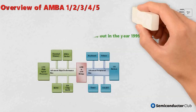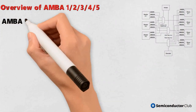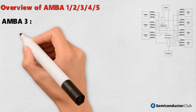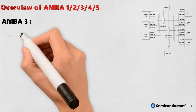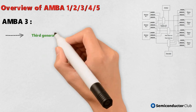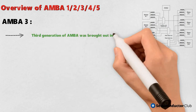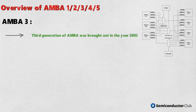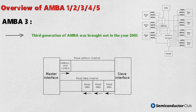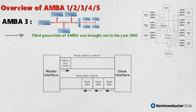AMBA 3: the third generation of AMBA was brought out in the year 2003. Through this version, ARM introduced Advanced Extensible Interface AXI 3 (AXI V1.0), with slight modifications in AHB and APB. AHB-Lite V1.0 and APB 3 V1.0 came out respectively. Advanced Trace Bus (ATB V1.0) was also introduced to allow on-chip debug and trace solutions.